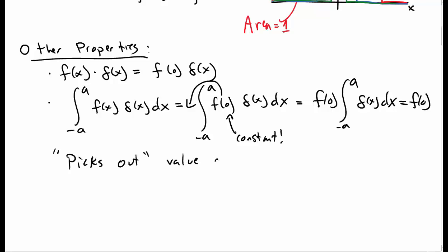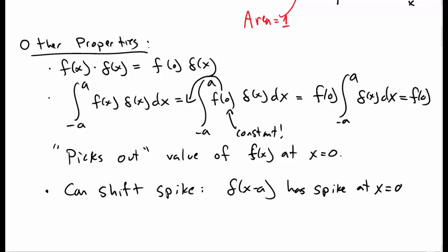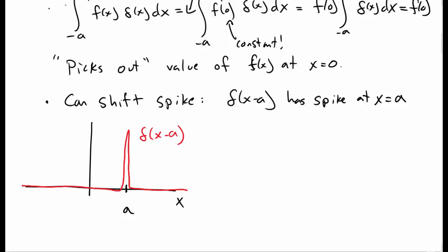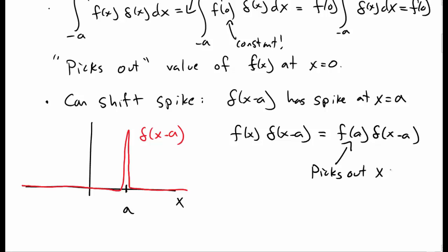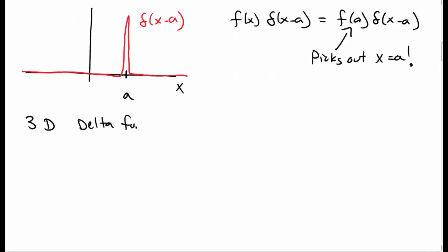A delta function is really useful because it can pick out the value of a function at a particular point — here at x equal to 0. You can shift the delta function to pick out values at other points. Delta of x minus a has a spike at x equal to a; whenever the thing inside the delta function is equal to 0, that's where your spike is. So delta of x minus a is 0 everywhere except at x equal to a, where you'd have an infinite spike. Multiplying a function times delta of x minus a picks out the value of the function at x equal to a.